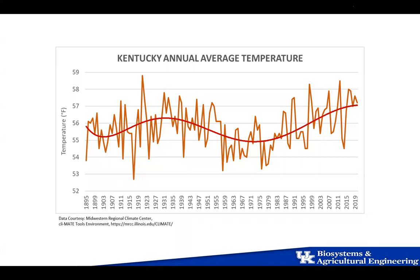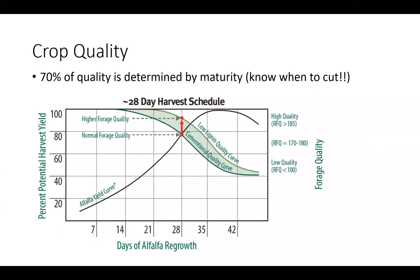Timeliness is really important going forward. Seventy percent of hay quality is determined by maturity — I'll state that again, 70 percent is determined by maturity — so it's really about knowing when to cut. For low-lignin alfalfa, if there's rain in the forecast at day 28 when you'd typically cut, you can extend that duration to maybe 35 days and still have similar quality with additional yield. Knowing when to cut is the majority of the quality battle.